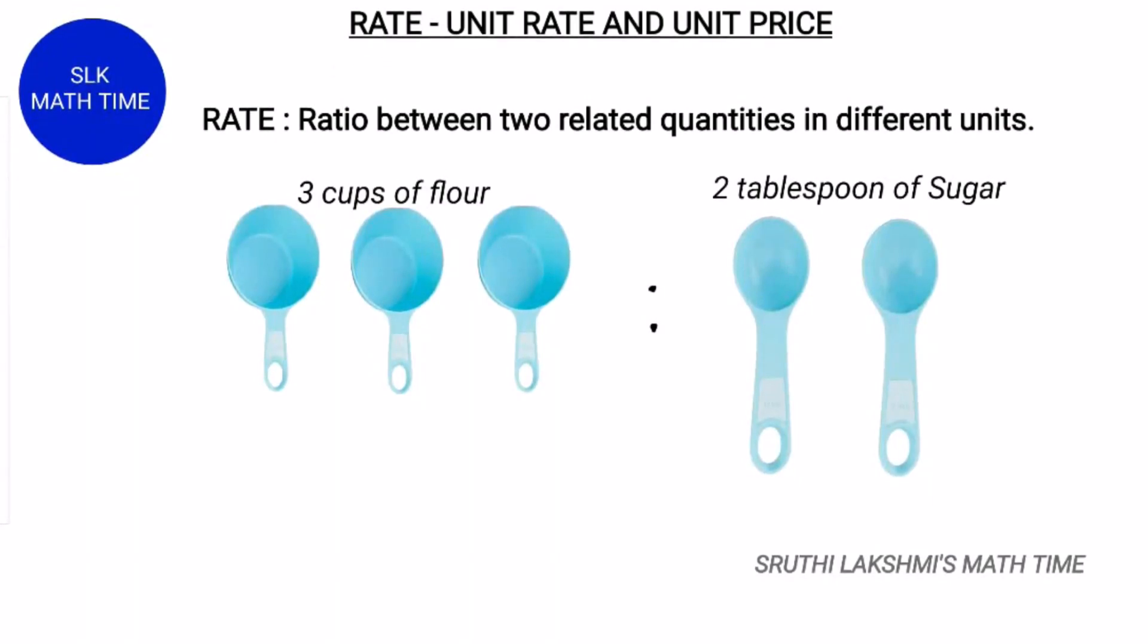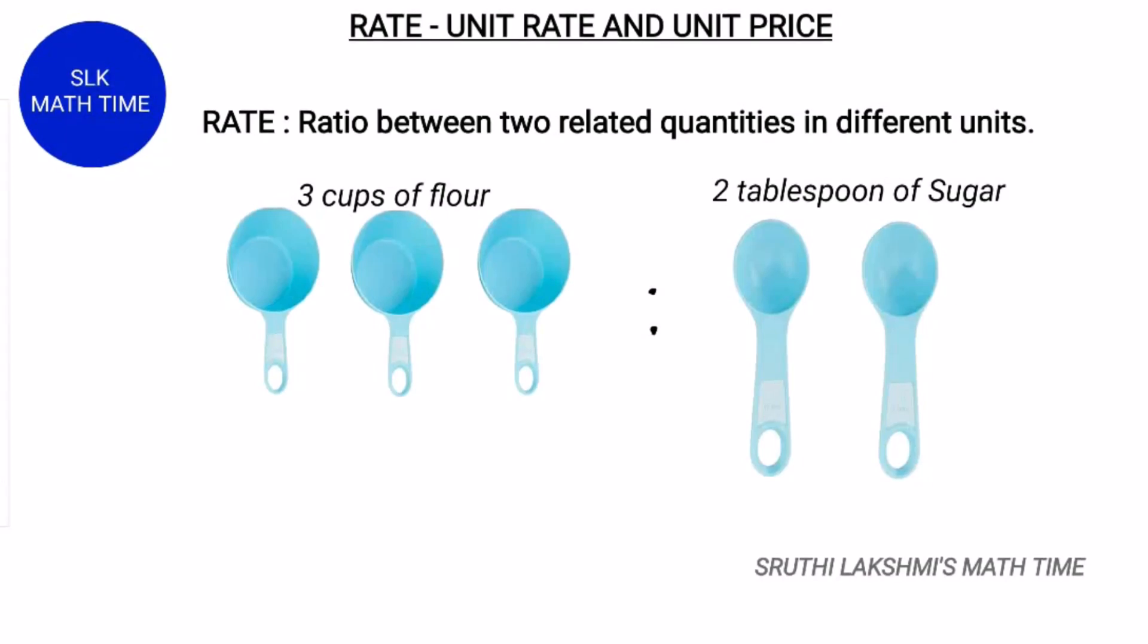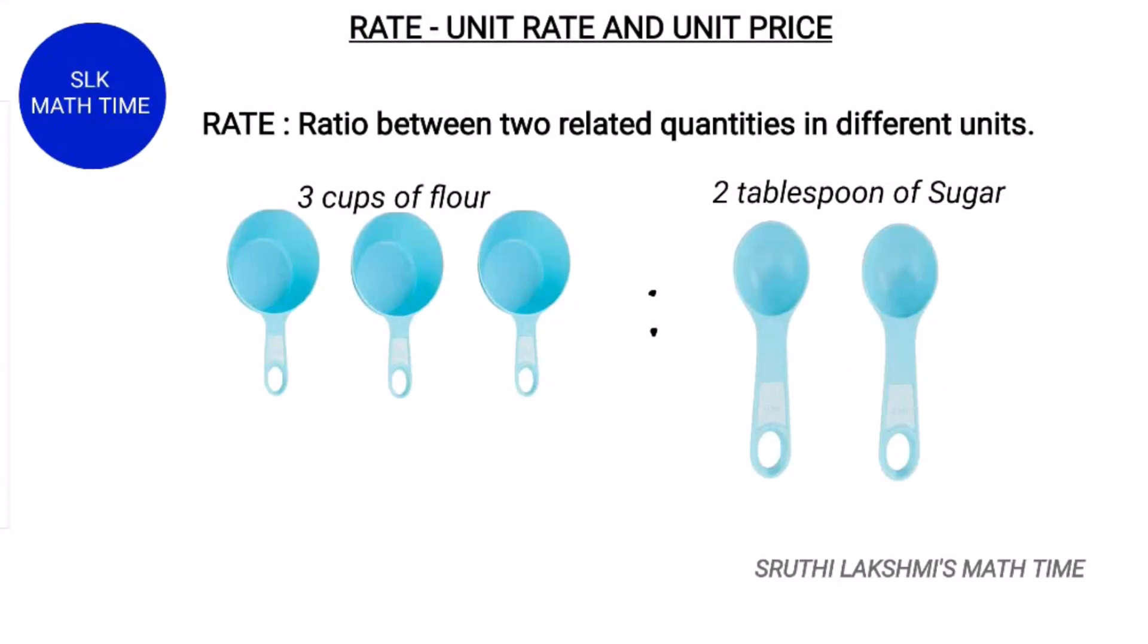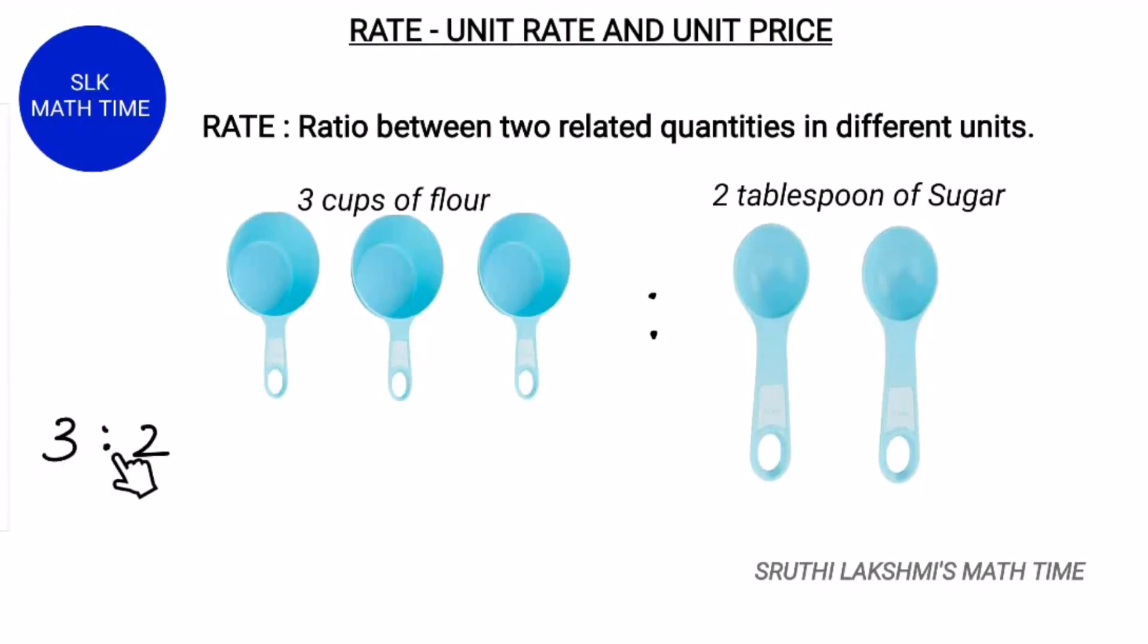A rate is a special kind of ratio where the two amounts being compared have different units. For example, you might use rate to compare 3 cups of flour to 2 tablespoons of sugar. The units, cups and tablespoons, are different. So here it's 3 is to 2 or 3 by 2.